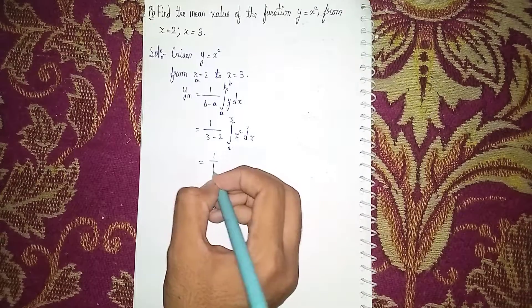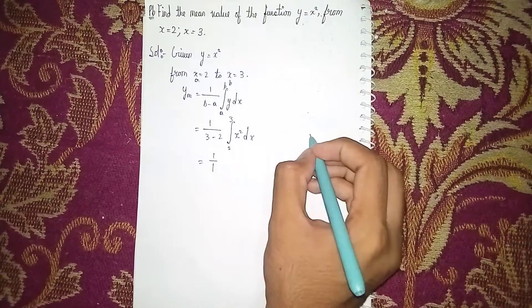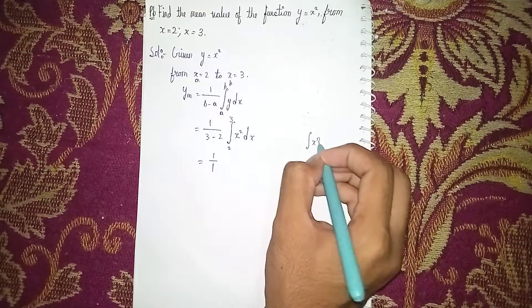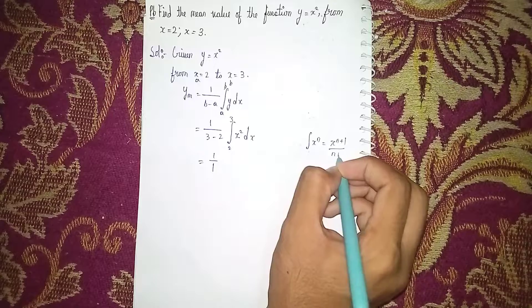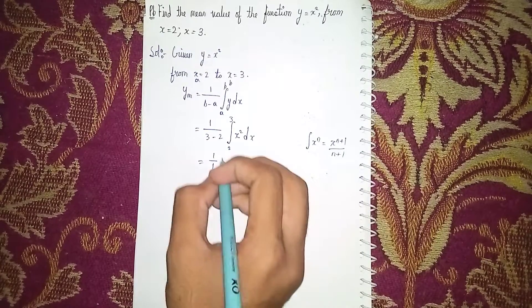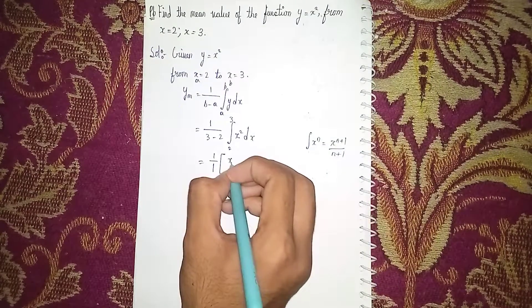Now integrate this function. The integral of x^n is equal to x^(n+1)/(n+1). So here it becomes x^(2+1)/(2+1) with limits 2 to 3, which is x³/3 with limits 2 to 3.